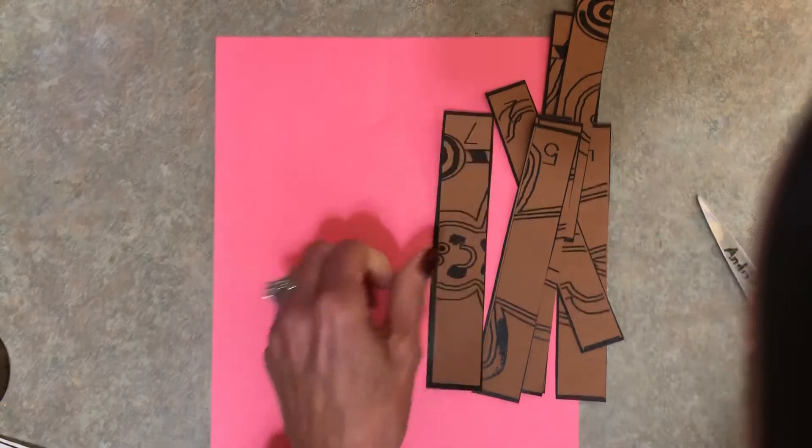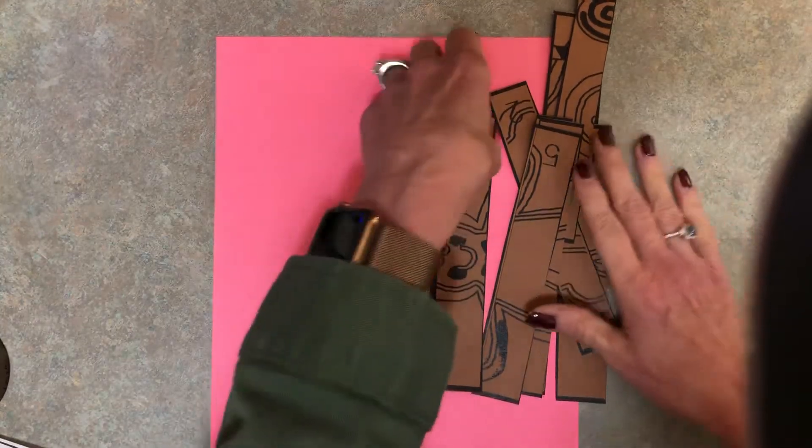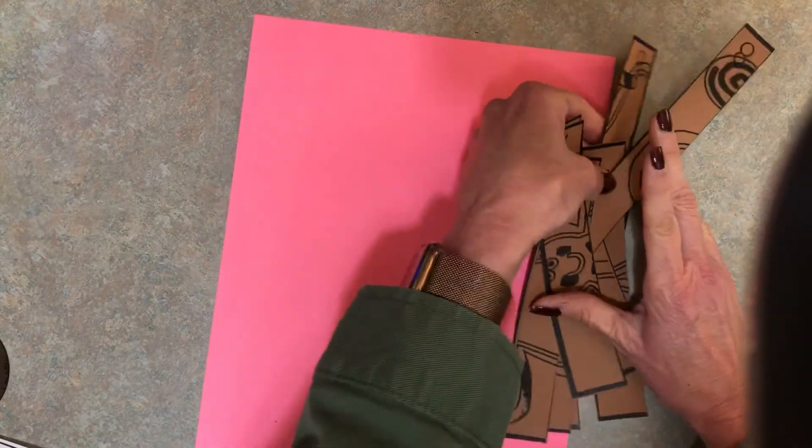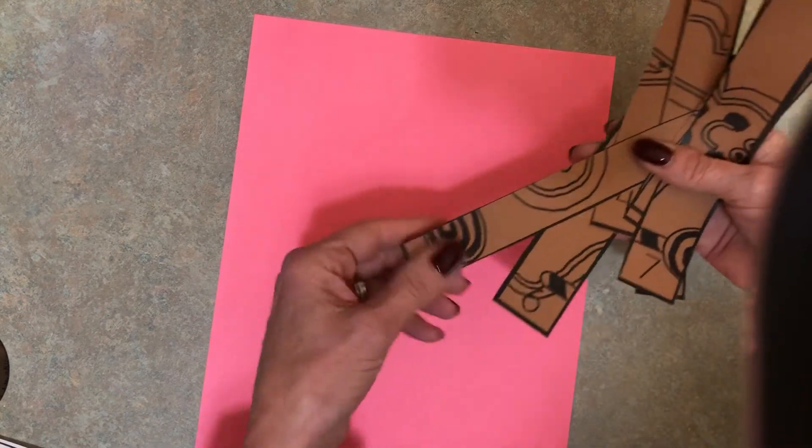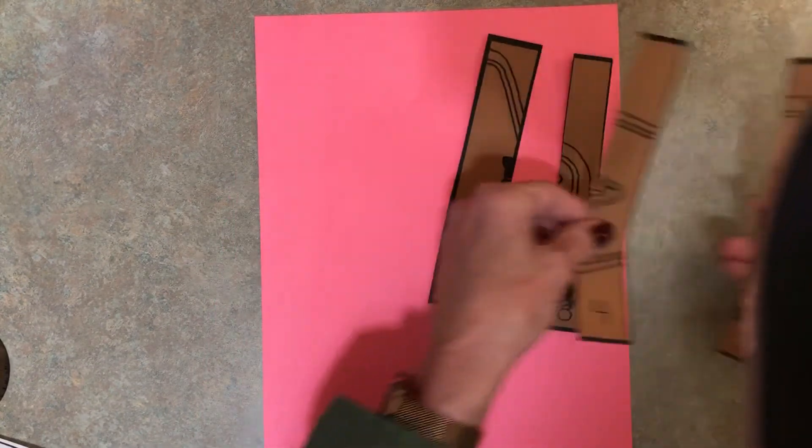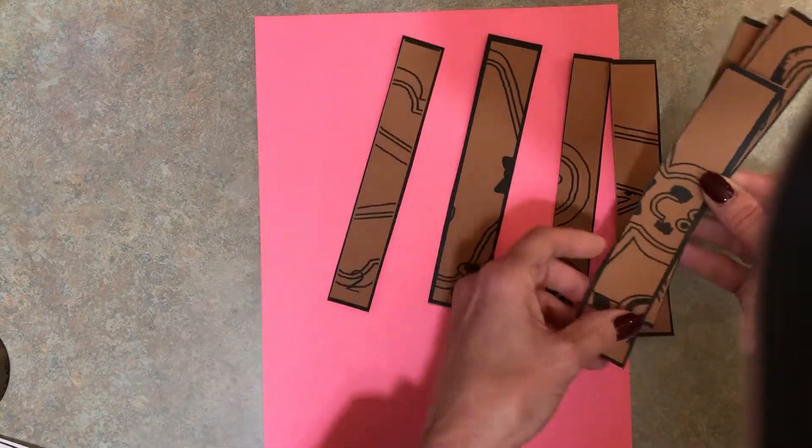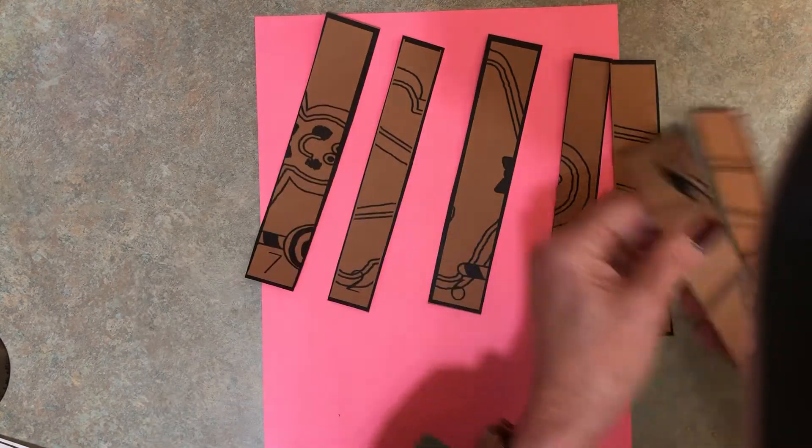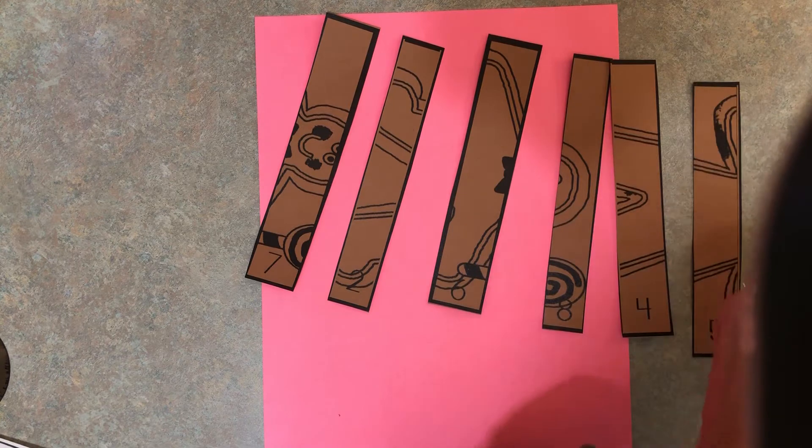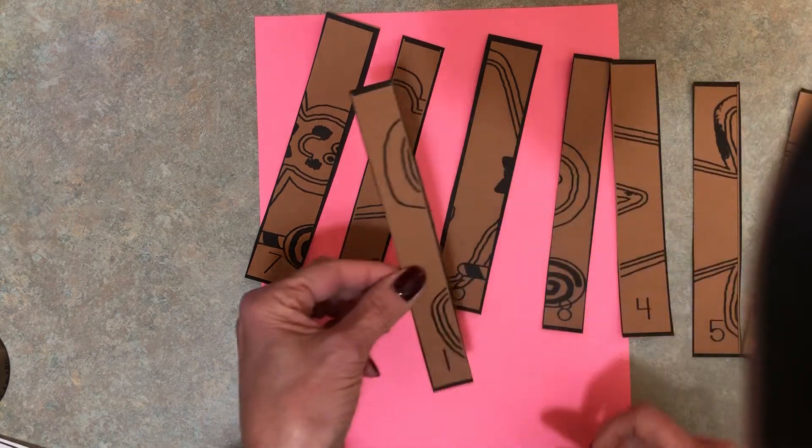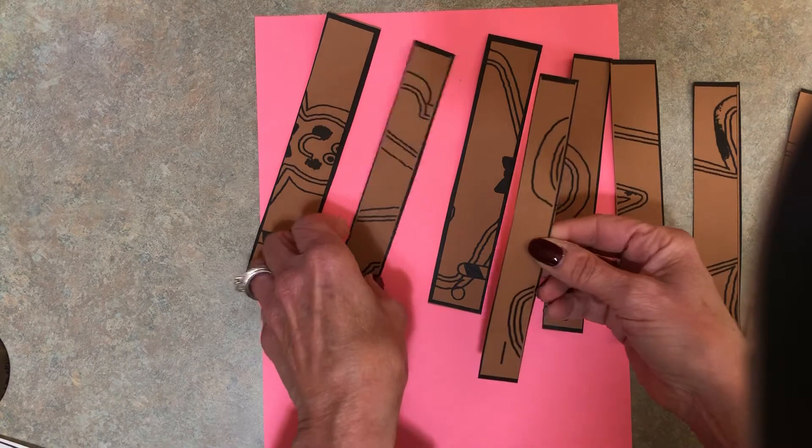Okay, now you'll notice that each one has a number on the edge, so your next job is you're going to put them in order from one—I think it goes to nine. So you're gonna get one, then two, you're gonna put behind it three, four, five, six, seven, and then eight.